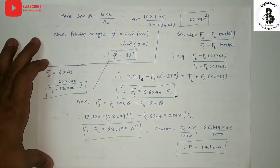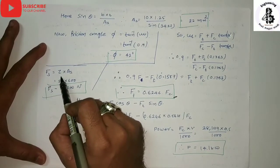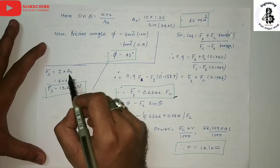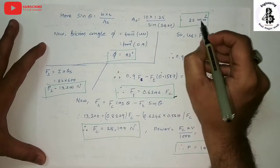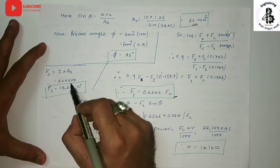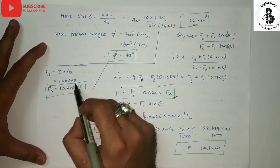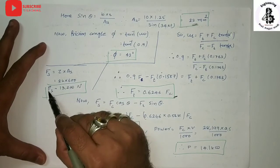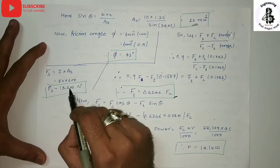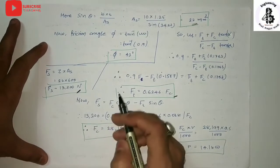The shear force Fs = tau × As = 600 × 22 = 13,200 Newtons.